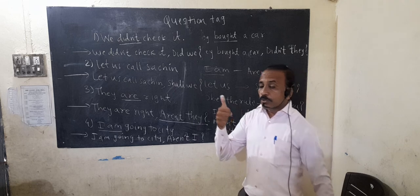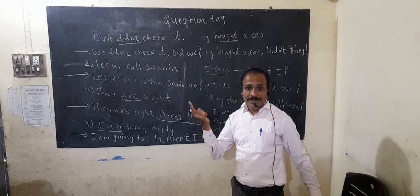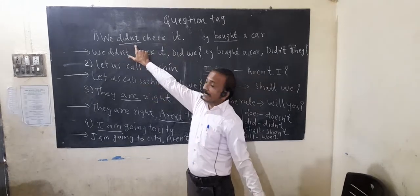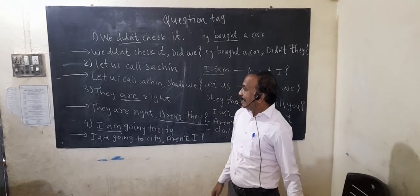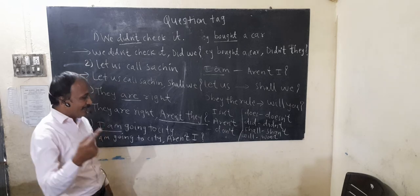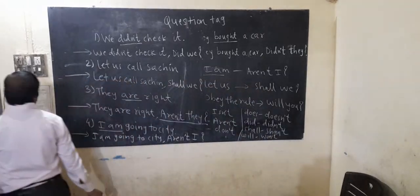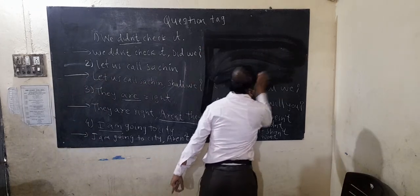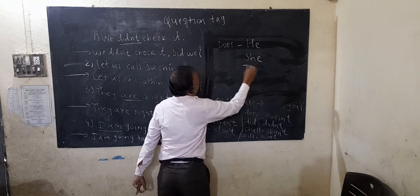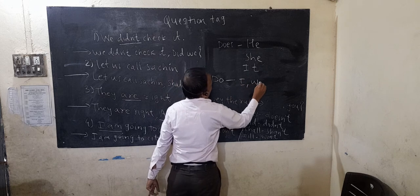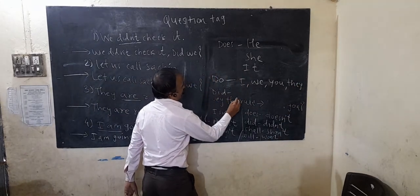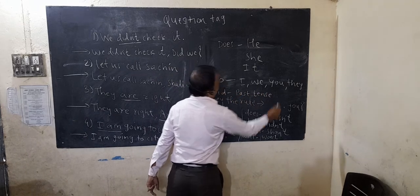Third: if there is no helping verb, we check whether the statement is present tense or past tense. 'Does' is used for he, she, it in the present tense. 'Do' is used for I, we, you, they in the present tense. 'Did' is used for the past tense. If the statement is positive, we use the negative form: 'doesn't', 'don't', or 'didn't'.